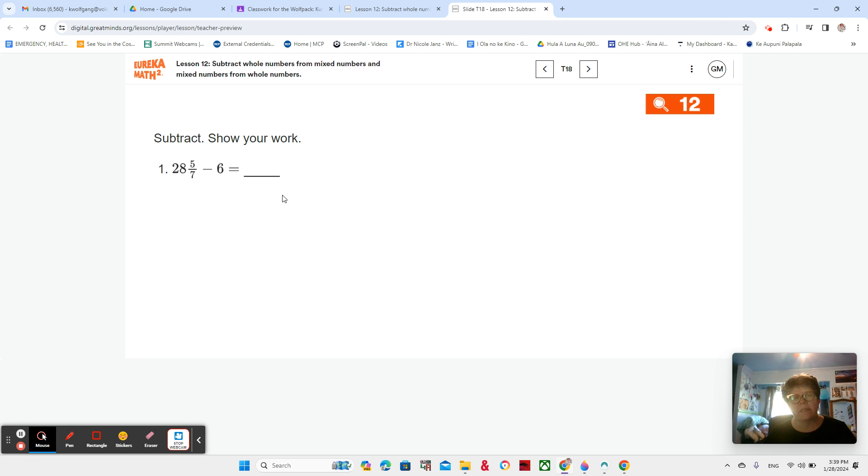28 and 5 sevenths minus 6. So I have 28 and 5 sevenths pizzas, and I'm giving 6 of them away. I can just take my 5 sevenths and put it on the side, right? And then I'm still going to have it after I give my 6 away. Because I'm starting with a mixed number and taking away a whole number, right?